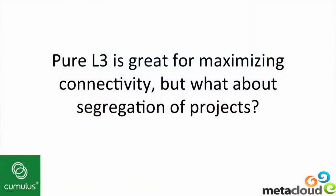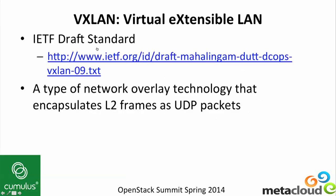Obviously you can't trunk a VLAN all the way across your L3 ECMP fabric — it just doesn't work. So there's a solution for that: VXLAN, Virtual Extensible LAN. This is an IETF draft standard. If you're really interested in VXLAN, I'd highly recommend you read this draft. It's one of the better network standard proposals I've seen — it clearly states the problem, clearly states the solution, clearly states how it works. It's very well written and very digestible.